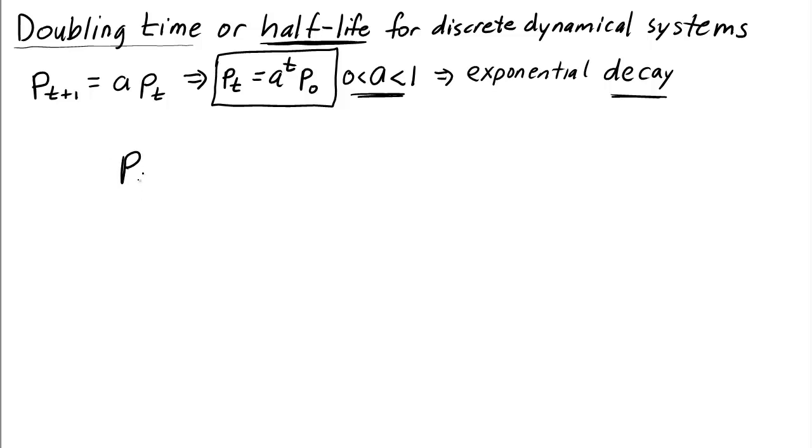So at what time is pt, which is a to the t times p0, equal to one half the initial conditions p0? Again, we assume that we have non-zero initial conditions. So we can divide both sides of the equation by p0. And we have a to the t equals one half.